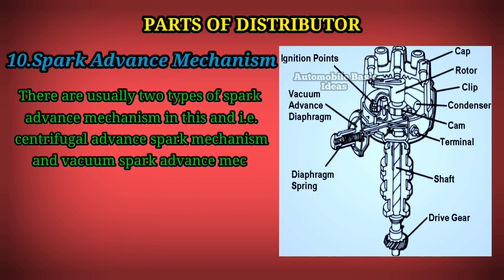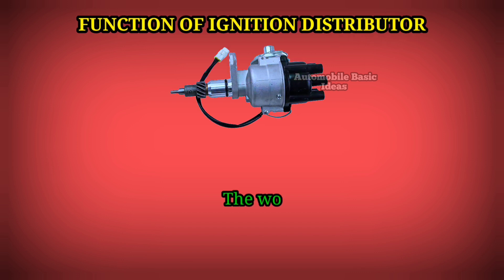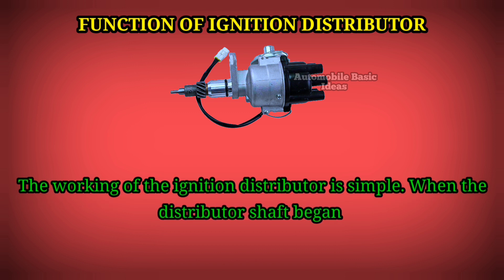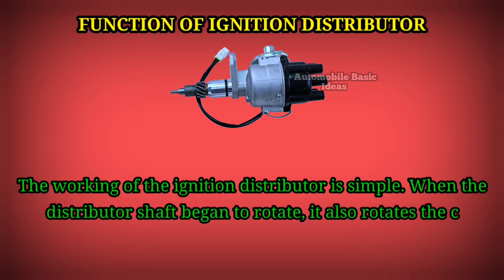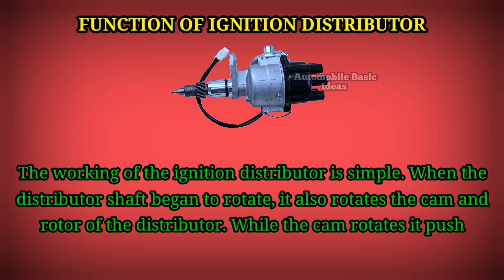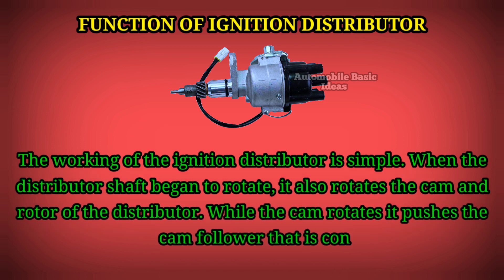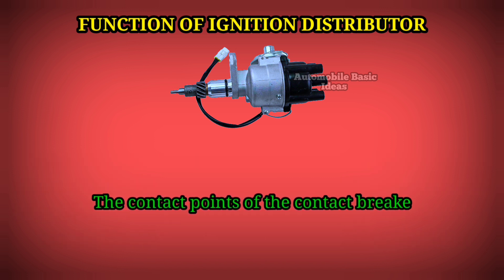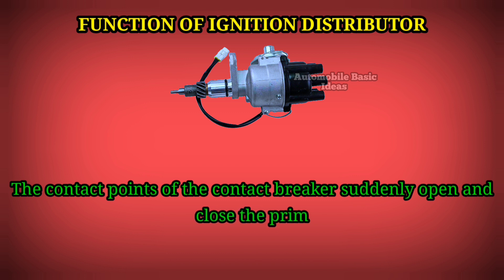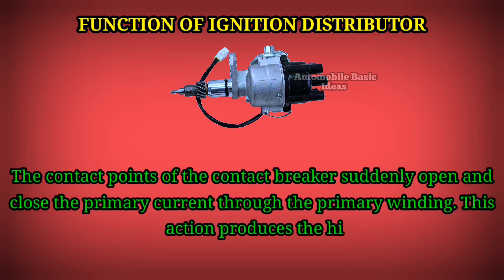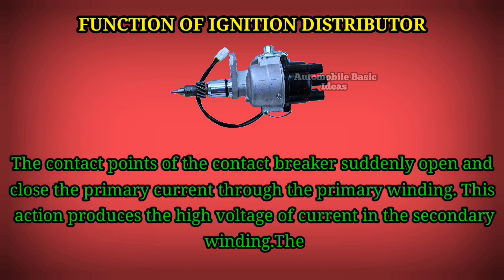Function of Ignition Distributor: When the distributor shaft begins to rotate, it also rotates the cam and rotor of the distributor. While the cam rotates, it pushes the cam follower connected to the contact breaker. The contact points of the contact breaker suddenly open and close the primary current through the primary winding, producing a high voltage current in the secondary winding.